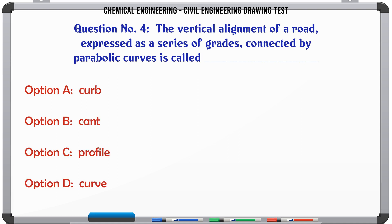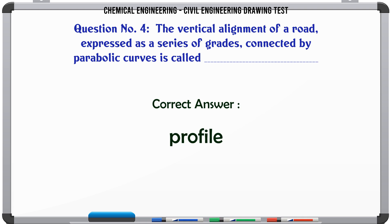The vertical alignment of a road expressed as a series of grades connected by parabolic curves is called. A. Curb. B. Cant. C. Profile. D. Curve. The correct answer is Profile.